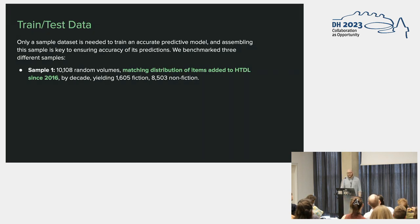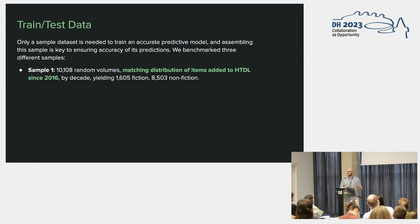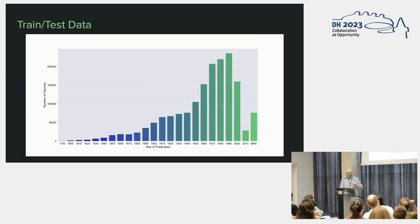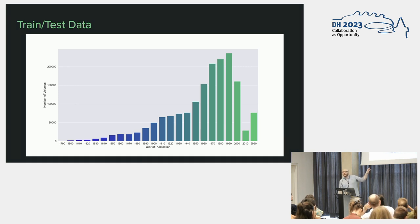The first step is to compile our train and test datasets. We have three different sampling logics — I creatively call them sample one, two, and three. Sample one is just over 10,000 random volumes matching the distribution of items added to the HDDL since 2016 by decade. We're looking for a 20/80 fiction/nonfiction split. Here is a plot of the decades of the 1.7 million volumes added since 2016 — we wanted our train and test dataset to reflect a similar distribution of dates, weighting decades with more volumes to have more impact in training.